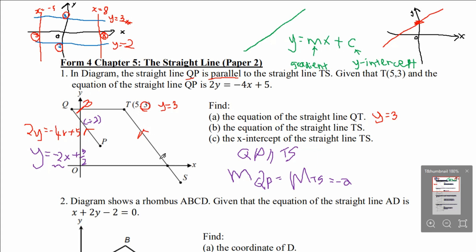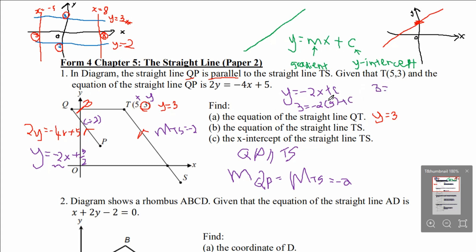To form the equation of TS, we have gradient equals to negative 2, giving Y equals to negative 2X plus C. To find C, substitute the coordinate of T (5, 3): 3 equals to negative 2 times 5 plus C, so 3 equals to negative 10 plus C, giving C equals to 13. The final equation is Y equals to negative 2X plus 13. This is the answer for part B.